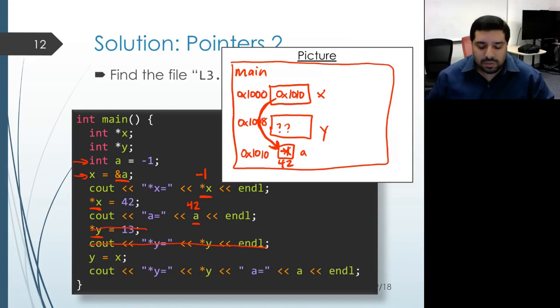On the next line we have the assignment Y equals X. With an assignment in C++ we always have value semantics, meaning that we copy the value from the right hand side into the object associated with the left hand side. So we make a copy of the value inside of X into the memory location for the object Y.